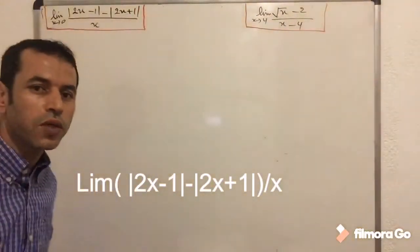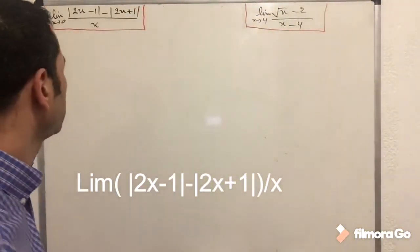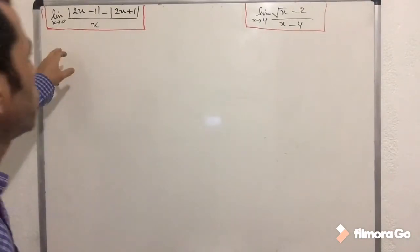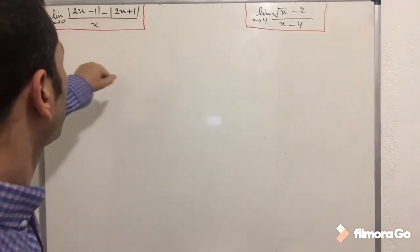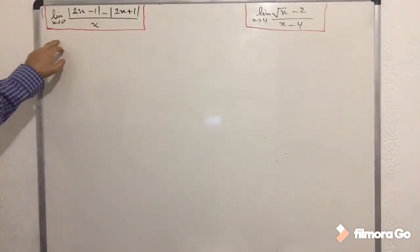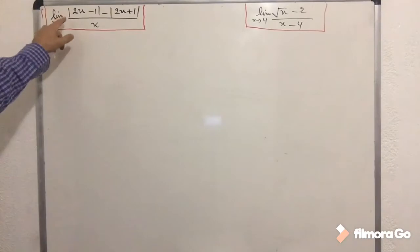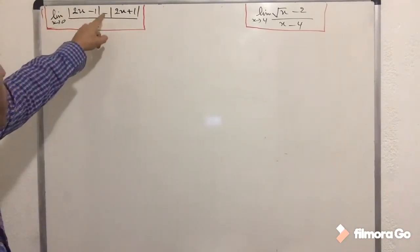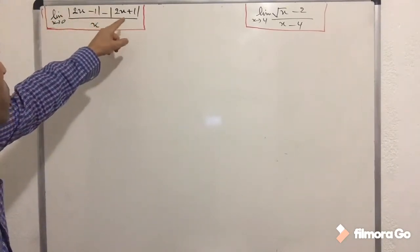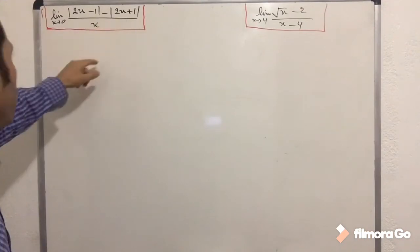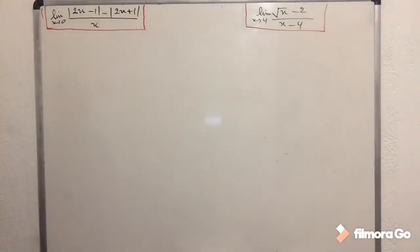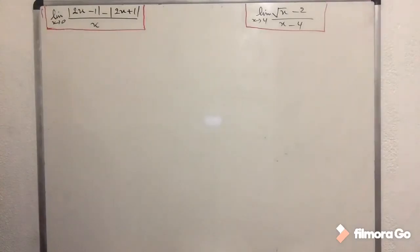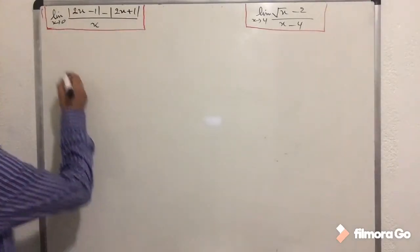Hi, good morning. Today's video we are going to evaluate two limits with two different examples. The first limit we have: absolute value of 2 times x minus 1, minus absolute value of 2x plus 1, over x, when x is approaching to 0. Let's go through this example to evaluate this limit.